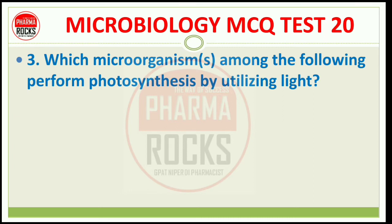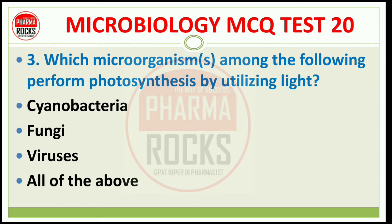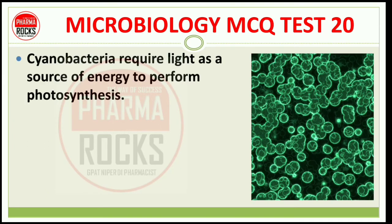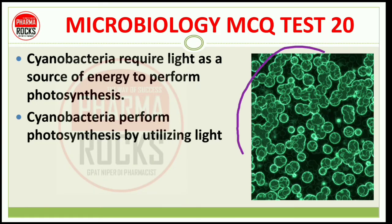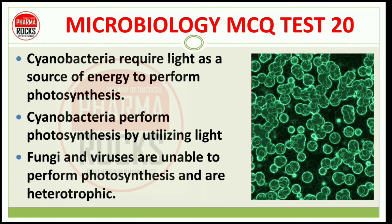Question number 3: Which microorganism among the following performs photosynthesis by utilizing light? Options: cyanobacteria, fungi, viruses, or all of the above. इनमें से कौनसी microorganism light को utilize करके photosynthesis करती है? The right answer is option A, cyanobacteria. Cyanobacteria require light as a source of energy to perform photosynthesis. Fungi and viruses are unable to perform photosynthesis and are heterotrophic.